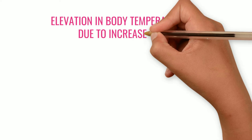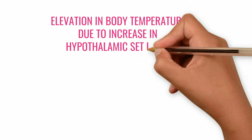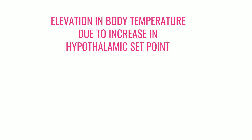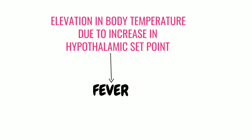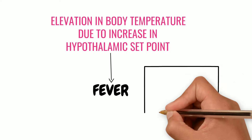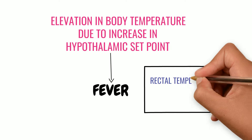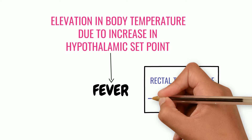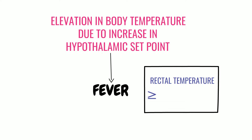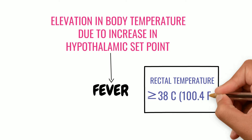Due to all these mechanisms, body temperature is also increased to 39.5°C. This elevation in body temperature due to an increase in the hypothalamic set point is termed fever, which is defined as a rectal temperature — that is, core body temperature — more than or equal to 38°C, which is 100.4°F.